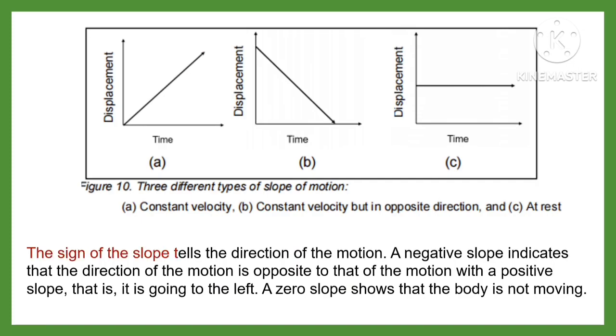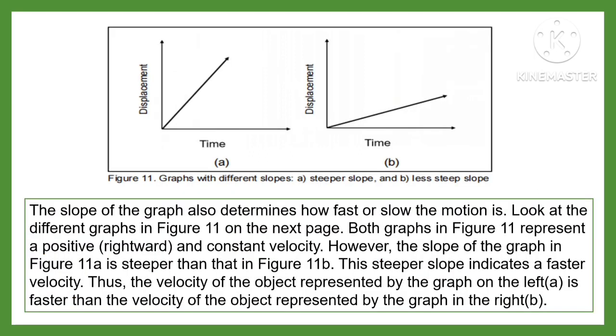The sign of the slope tells the direction of the motion. A negative slope indicates that the direction of the motion is opposite to that of the motion with a positive slope—that is, it is going to the left. A zero slope shows that the body is not moving. The slope of the graph also determines how fast or slow the motion is. Look at the different graphs in Figure 11 on the next page.